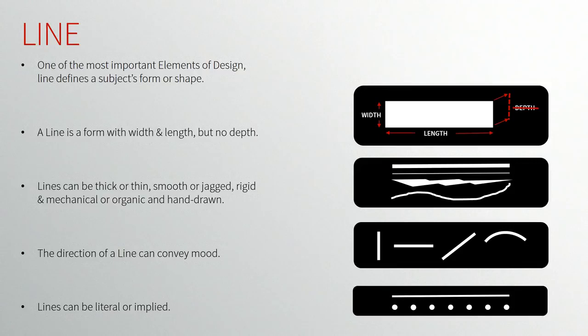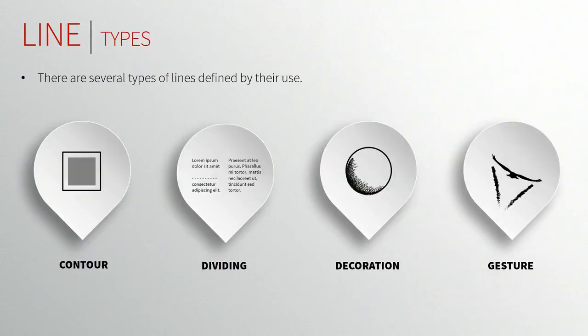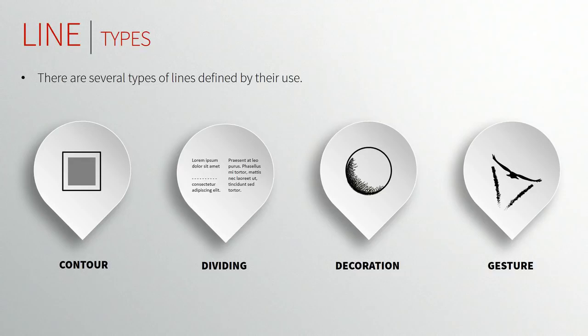There are four basic types of line. First, contour lines — anyone who's looked at a map will understand these. They're used to define edges, creating boundaries around or inside an object. Most lines you encounter in design tend to be contour lines. Dividing lines also define edges, but they divide by space — they're not solid lines. They use space to divide elements, like the empty space between paragraphs of text.